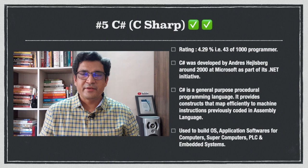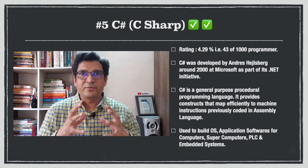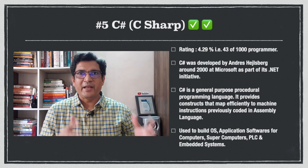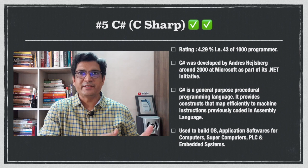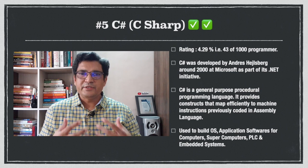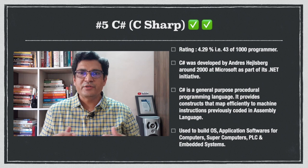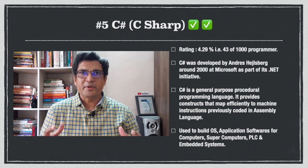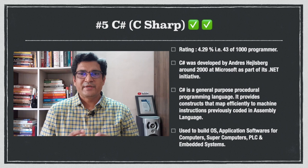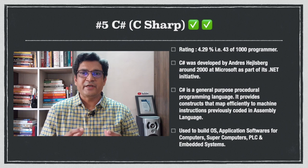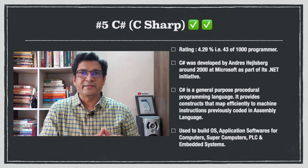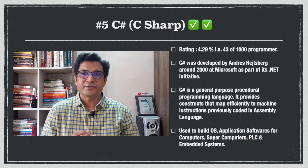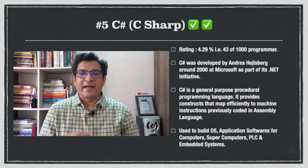At number 5 is C#. The code of Visual Basic .NET and C# is very similar — you can replace entire Visual Basic code with C# code. C# was developed by Anders Hejlsberg around the year 2000 at Microsoft as part of their .NET initiative. C# is a general-purpose procedural programming language that provides constructs mapping efficiently to machine instructions previously coded in assembly language. It is used to build operating systems, application software for computers, supercomputers, and embedded systems.